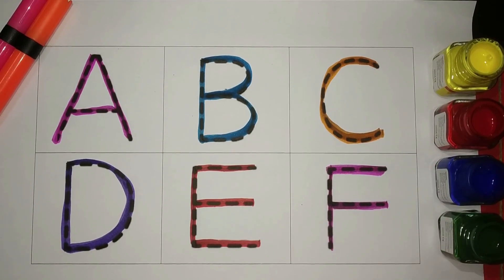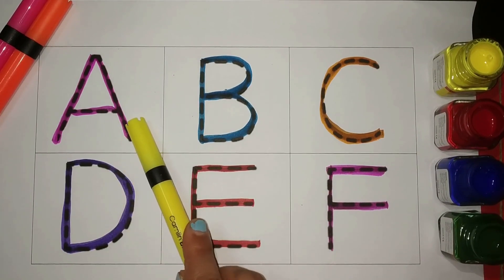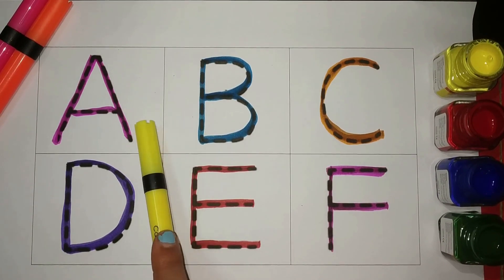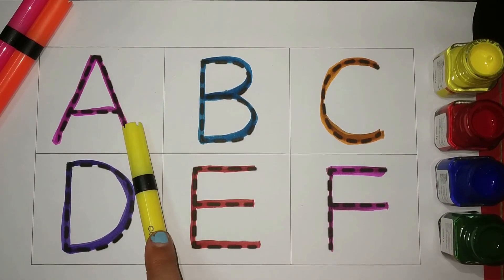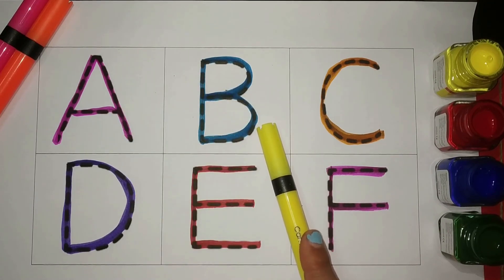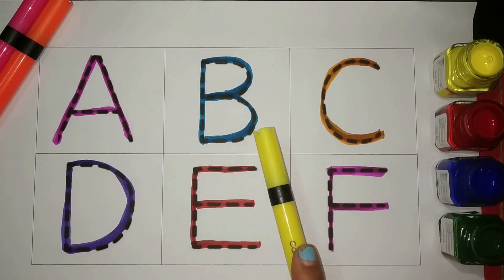Let's revise. A for apple. A for aeroplane. B for boy. B for boy.